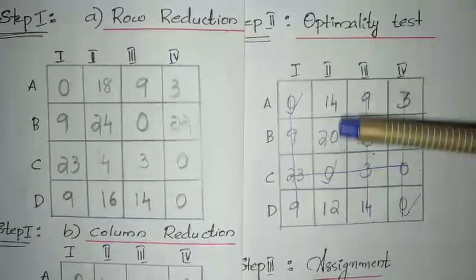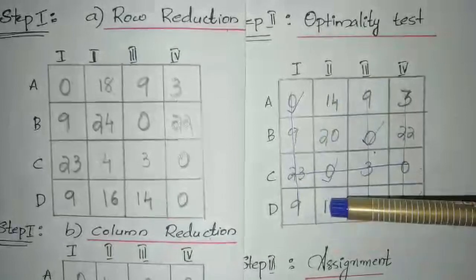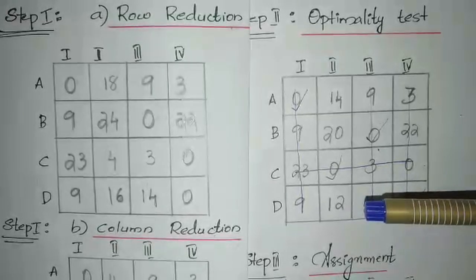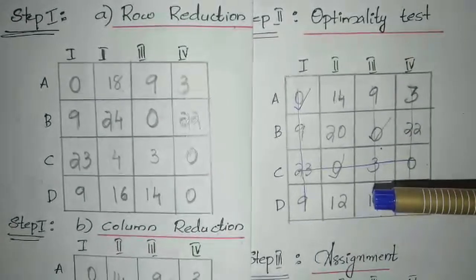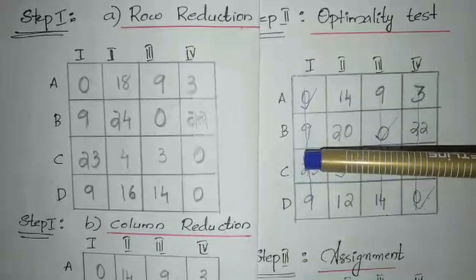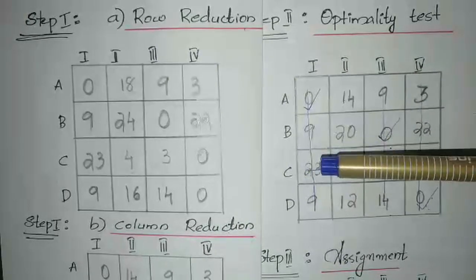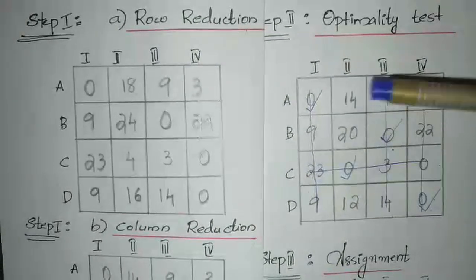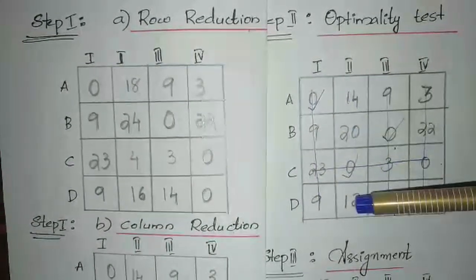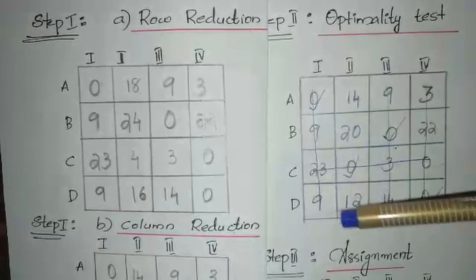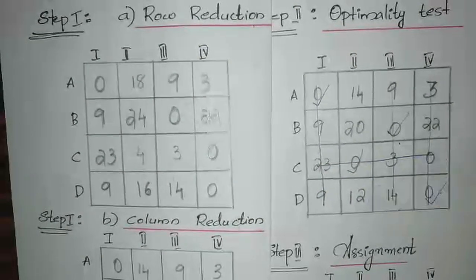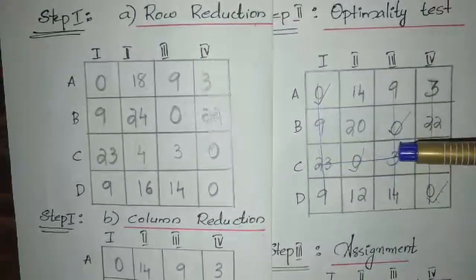The minimum value among undeleted cells is identified. After finding that minimum value, add it to the intersection points — where a vertical line and a horizontal line join. For the undeleted entries 14, 20, and 12, the minimum value is 12. At the intersection point, add 12: for example, 3+12 gives the updated intersection value, and 0+12 gives another updated value.